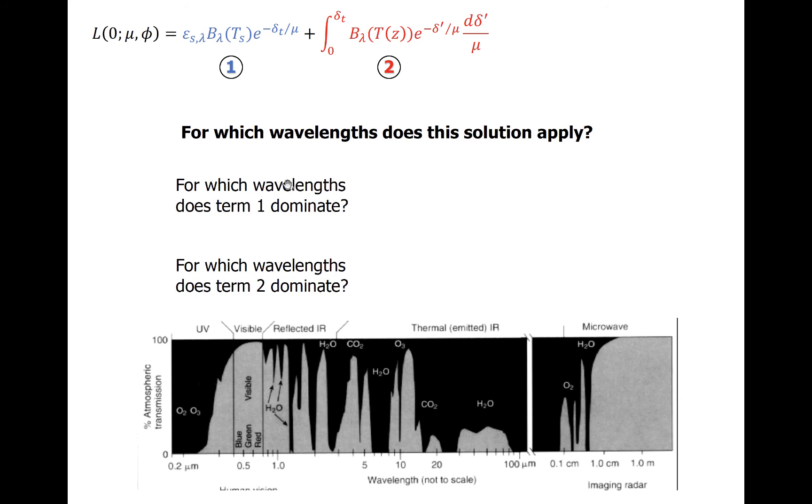Term 1 is much larger in atmospheric windows because the direct transmissivity of the atmosphere is high, and most of the radiation emitted by the surface reaches the top of the atmosphere. Term 2 would be more dominant in your absorption bands.